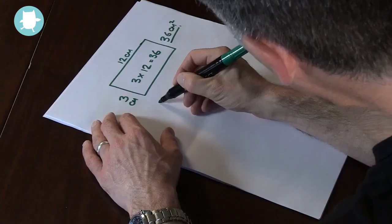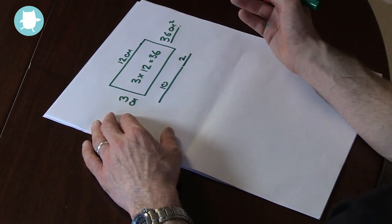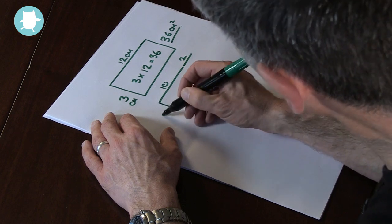But if I don't know my 12 times table, splitting my rectangle into two pieces, one 10 centimeters wide and one 2 centimeters wide, allows me to find the area.